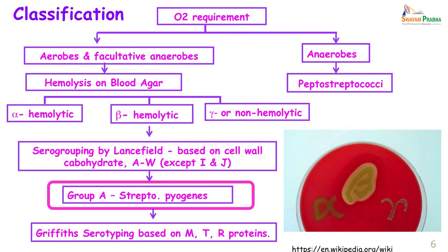Group A Streptococcus pyogenes are further classified based on Griffith's classification, serotyped based on the M, T, and R proteins. It is the group A streptococci that we are going to be concentrating on.